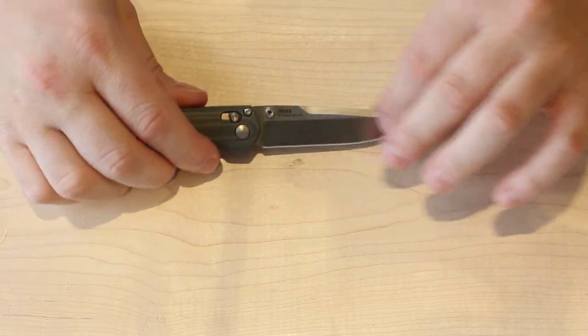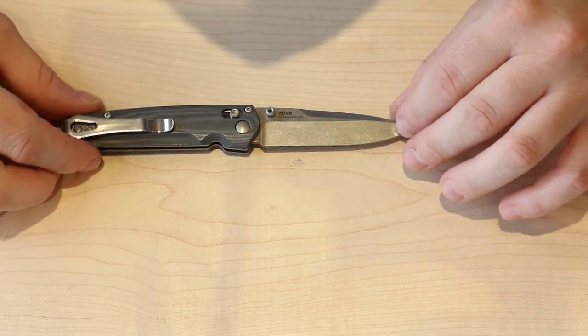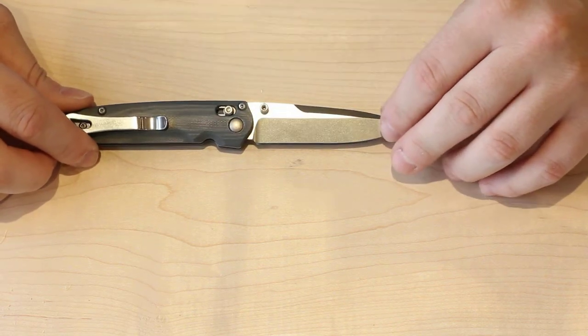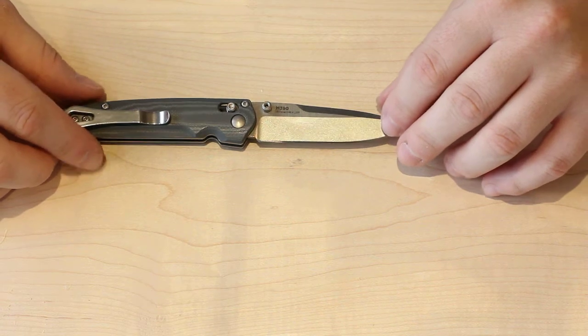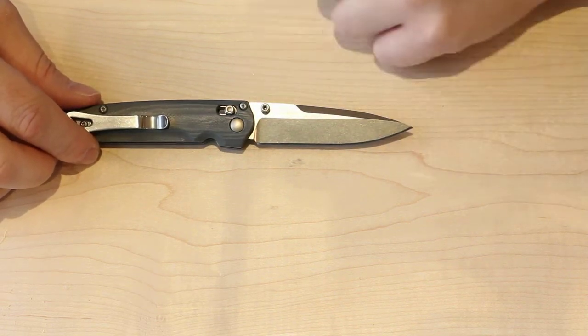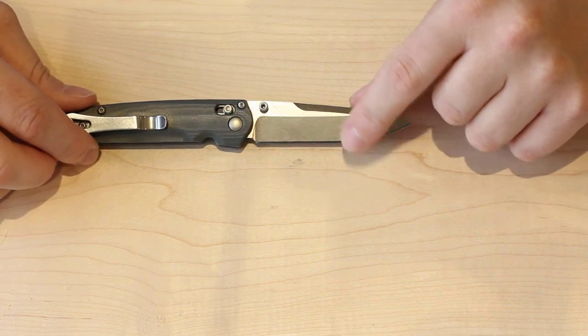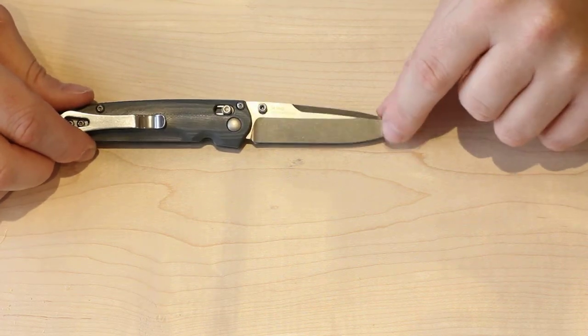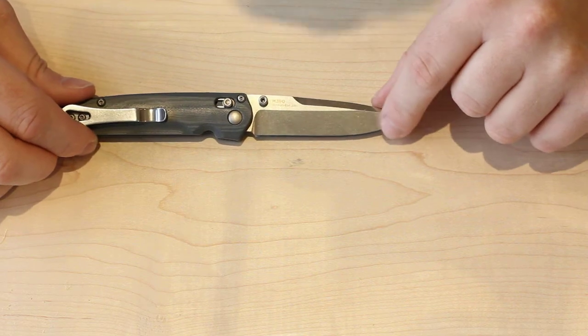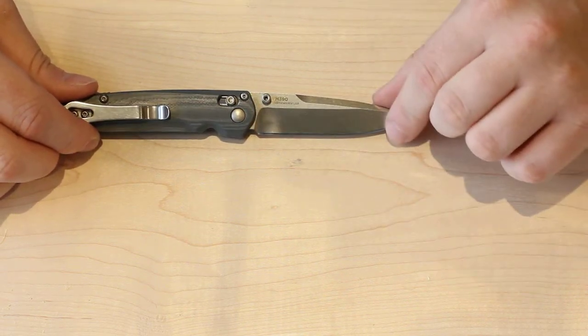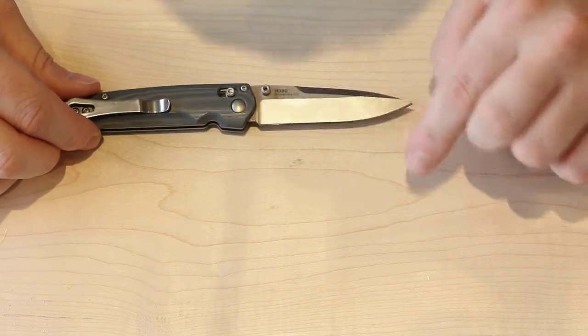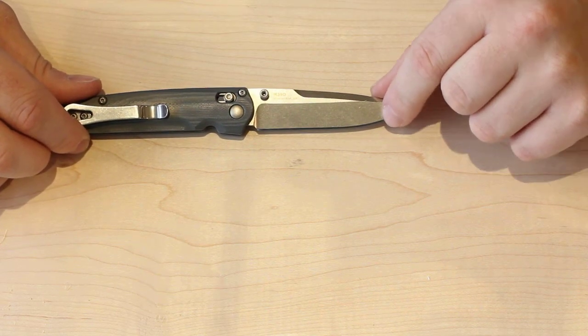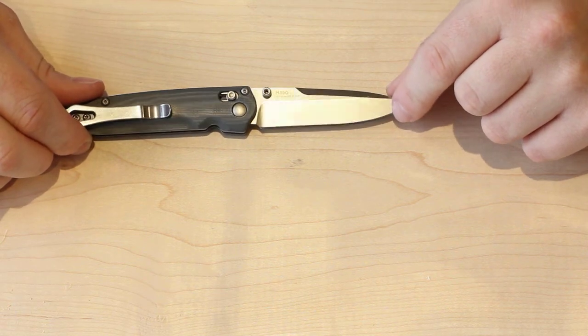The steel on this one is M390 from Austria. For me personally, this is one of the best overall knife steels for EDC carry pocket knives. It has very good edge retention, is very tough, and takes a very fine edge while also being highly corrosion resistant. It's probably one of the most corrosion resistant steels you can get besides specialty ones like H1 and LC200. Edge retention is a solid step above S30V and a slight step below S90V.